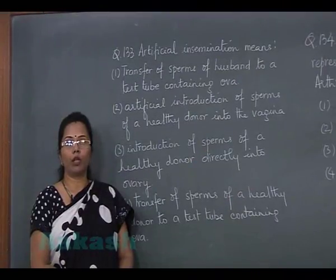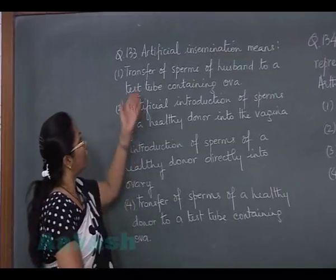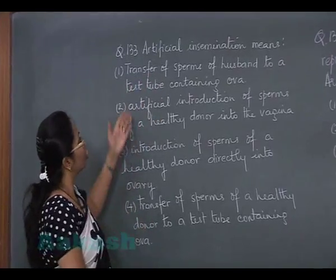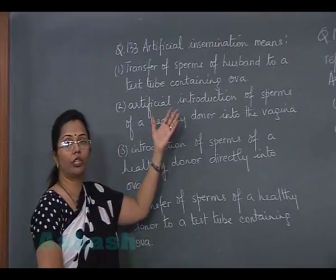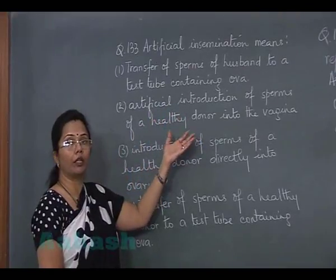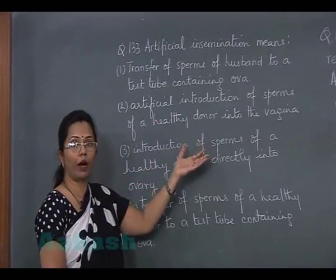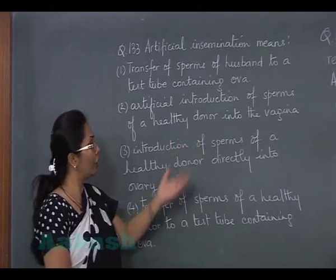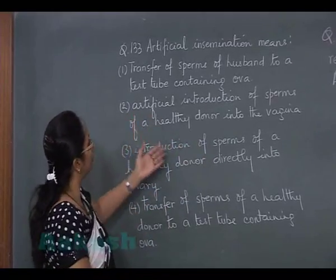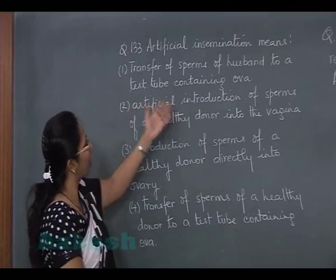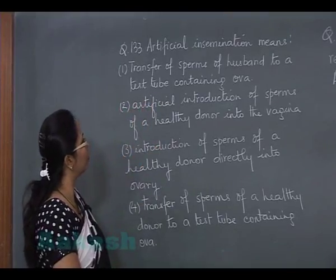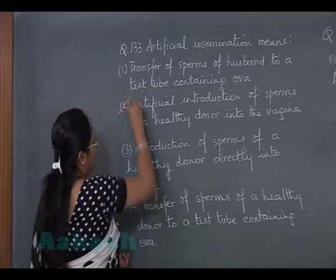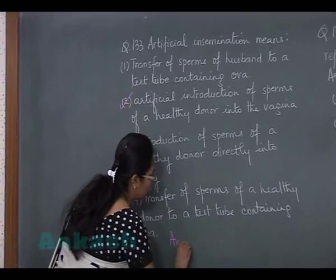Question 133: Artificial insemination means transferring semen collected from a male partner or donor into the vagina of the female. The correct option is 2: artificial introduction of sperms of a healthy donor into the vagina.